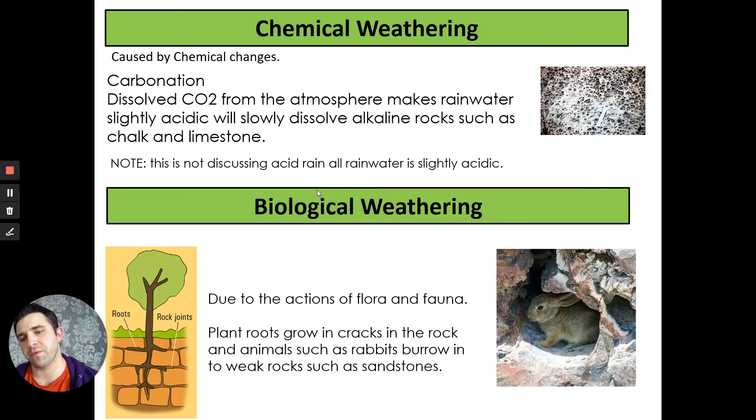We then have biological weathering. Biological weathering is nice and simple really. It's due to the flora and fauna, the biological things in the environment. Plant roots growing in the rocks will crack the rock and cause it to break apart. Rabbits or other animals that burrow, badgers, moles, they cause the rocks to weaken, especially soft rocks such as sandstone.